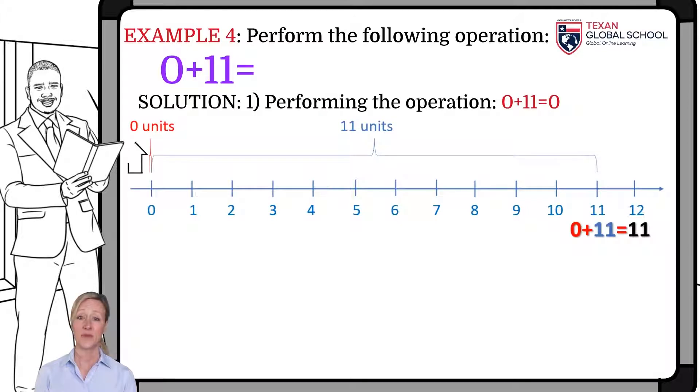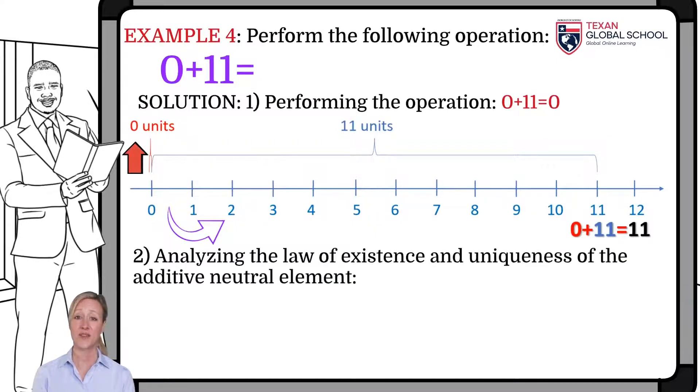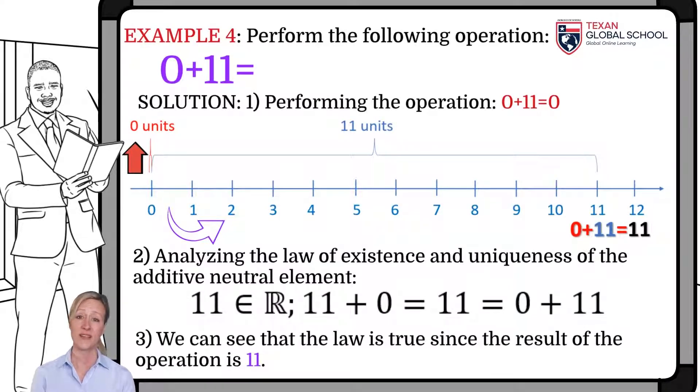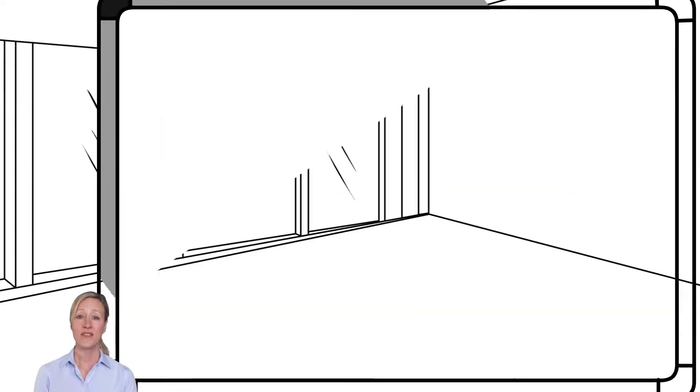In the example, we perform the operation of 0 plus 11. When drawing the number line, we do not advance any units since they are 0. Later we advance 11 units, thus obtaining the real number 11. In this way, we can see that if we add 0 with any other real number, it will always result in the same real number.